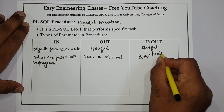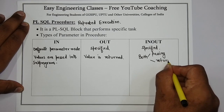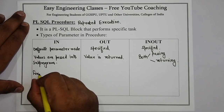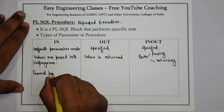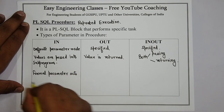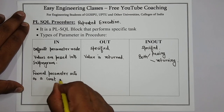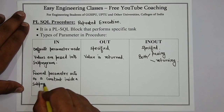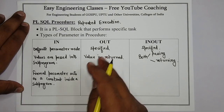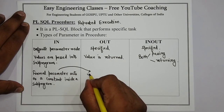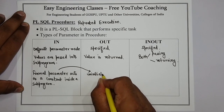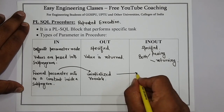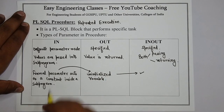IN-OUT is used for both passing the value and returning the value, so it is used for both purposes. Now, in a formal IN type of parameter, the formal parameter acts as a constant inside a sub-program, whereas in an OUT type of parameter it acts as an initialized variable.